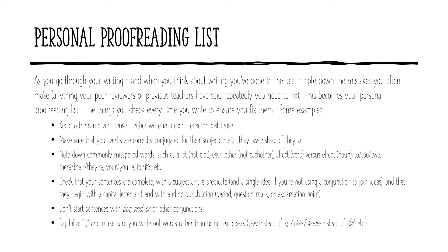One thing I highly recommend is that you create a personal proofreading list — these are the errors that you make traditionally. You can find them by asking what teachers in the past always told you about your writing. Do they tell you that you have a lot of sentence fragments? Do they tell you that you spell a certain word incorrectly a lot? Make a list of the things you do often, so you can check for them when you're doing your self-revision and self-editing to make sure you aren't making those mistakes.